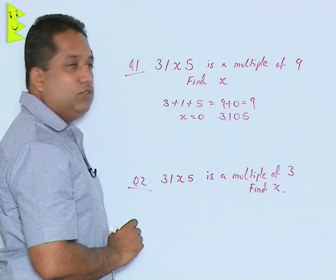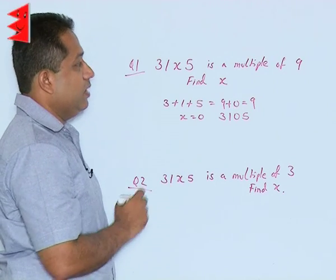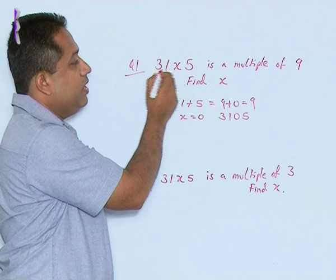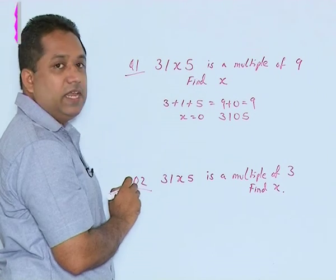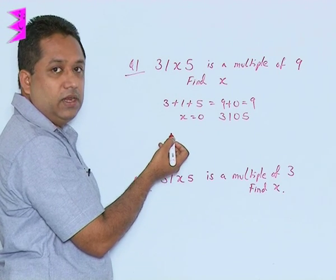But there could be other values of x. Can x be 1? Now if I take x as 1, the total is going to be 3 plus 1, 4, 4 plus 5, 9, 9 plus 1 is 10. Now 10 is obviously not divisible by 9.